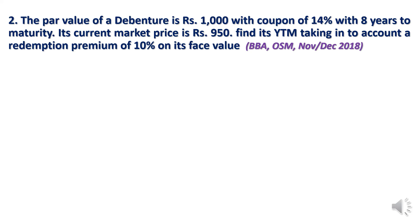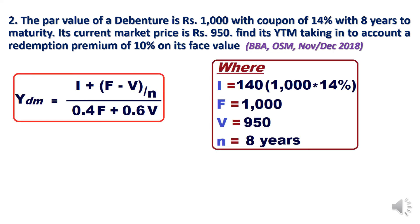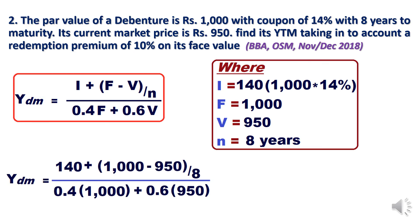Find the YTM, taking into account a redemption premium of 10% on face value. Note: we do not consider the redemption premium when applying these two formulas. Applying the formula: I = 14% on Rs.1000 = Rs.140, F = Rs.1000, V = Rs.950, N = 8 years. Applying the approximate YTM formula gives approximately 0.15, or 15%.